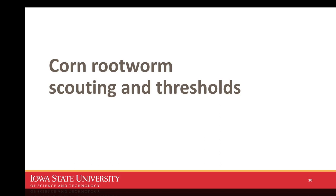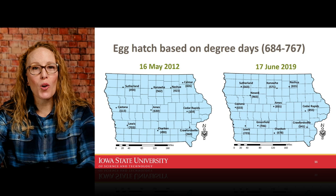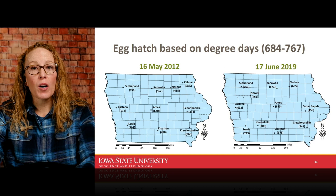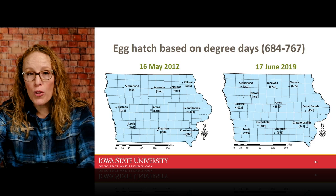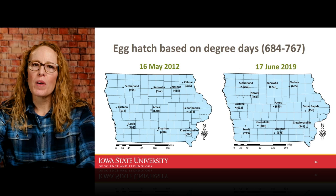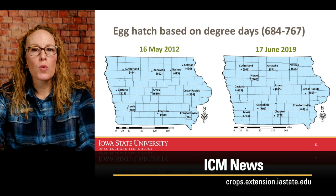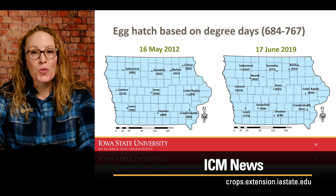Transitioning to scouting and using thresholds to make treatment decisions: rootworms develop to adults based on accumulating heat units, just like plants. I use a weather network around Iowa to track accumulating soil temperatures throughout the state. Every spring is a little different — 2020 was warm so temperatures accumulated faster. The benchmark is around 700 degree days, and southern counties warm faster than northern counties. Every year I put out a prediction map for egg hatch throughout the state through a free online newsletter called ICM News, so I encourage you to subscribe.